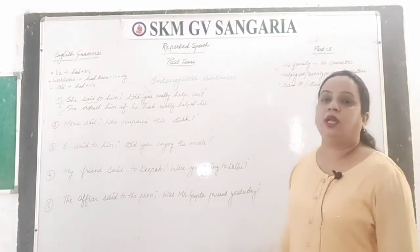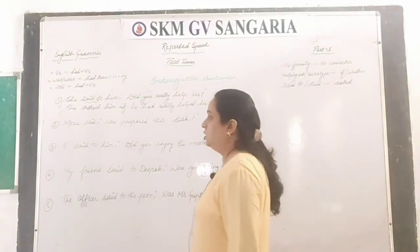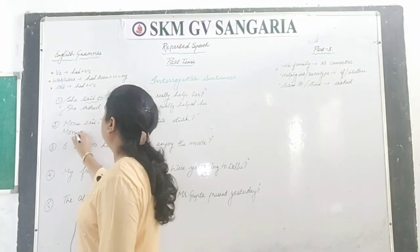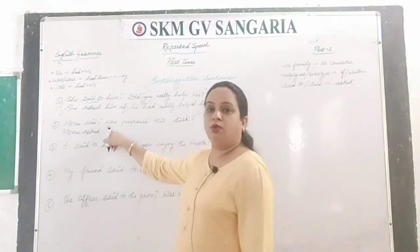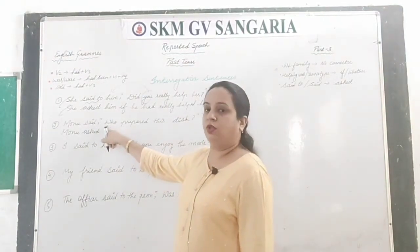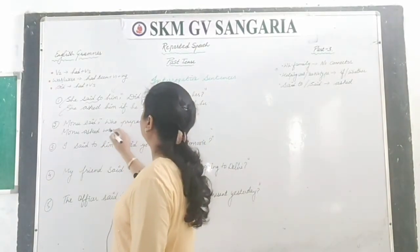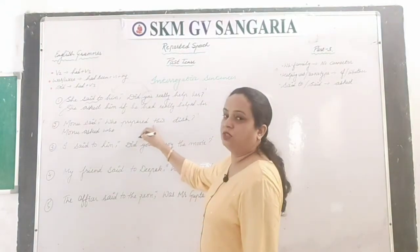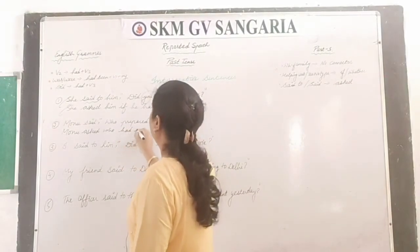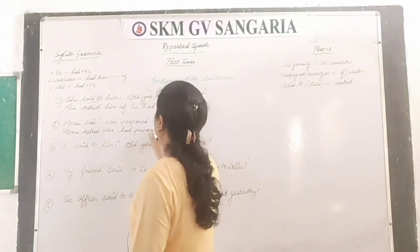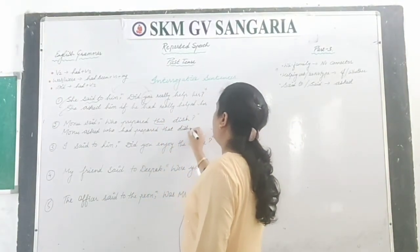Monu said, 'Who prepared this dish?' Answer: Monu asked — here 'who' is a WH-family word, so no connector is used. 'Prepared' is second form, changes to had plus verb third. Answer: Monu asked who had prepared that dish.